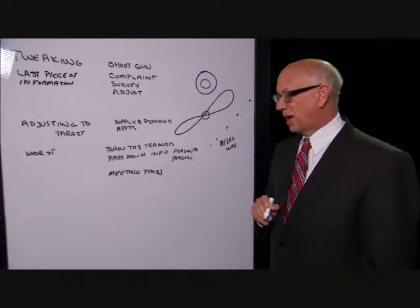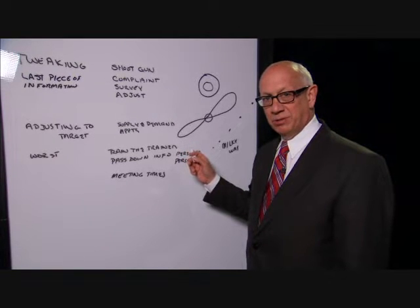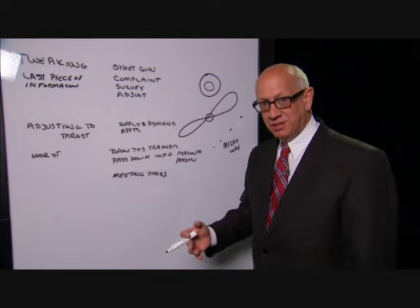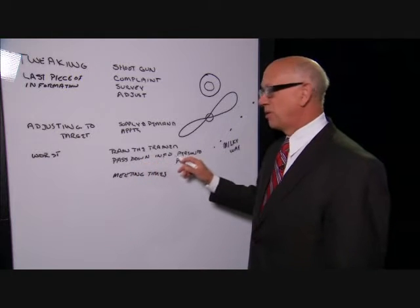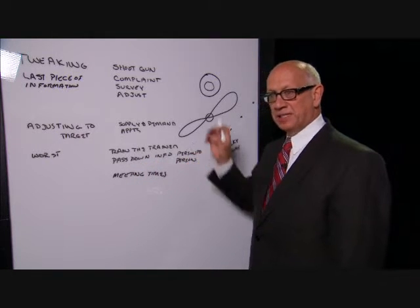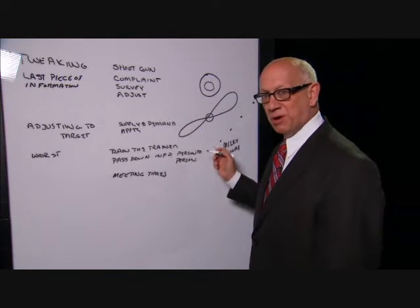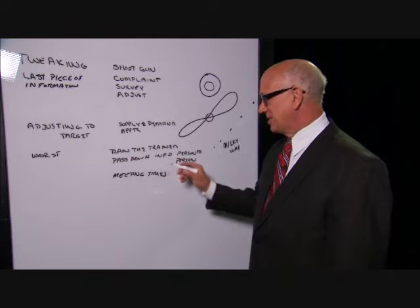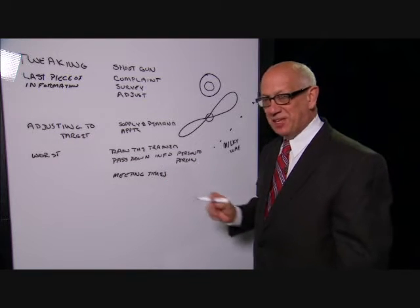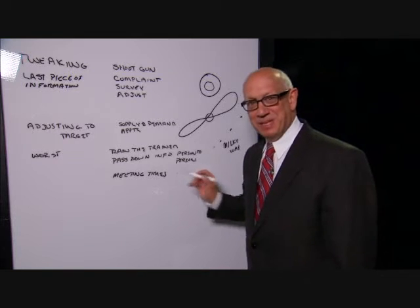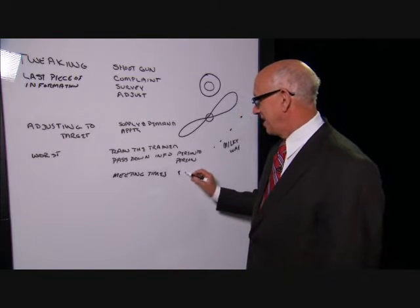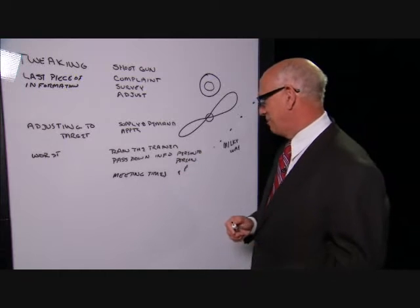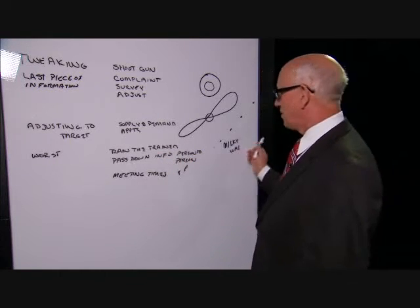This is the worst thing possible — shooting at the last target until you reach the Milky Way. We do this a lot. Examples: train-the-trainer, where you train somebody, they train someone else, they train someone else, and soon it's off to the Milky Way. Passing down information — I tell someone, they tell someone, they tell someone, and the message becomes garbage. Like the telephone game. A classic is meeting times: you say 8 o'clock, nobody's there, so you start at 8:05, then 8:10, 8:20 — this is called shooting for the Milky Way.